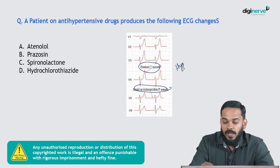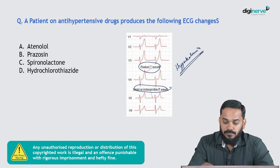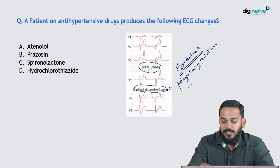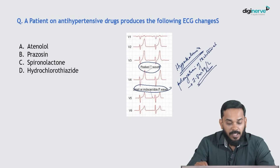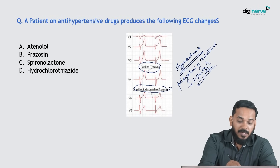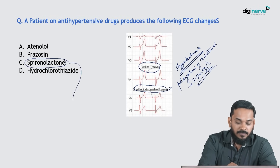Both of these are features of hyperkalemia. Another ECG feature seen in hyperkalemia is prolongation of the PR interval. This is usually seen at a plasma potassium concentration of 7 to 8 milliequivalents per liter. Among the given agents, the one which can possibly produce hyperkalemia is the aldosterone antagonist spironolactone.